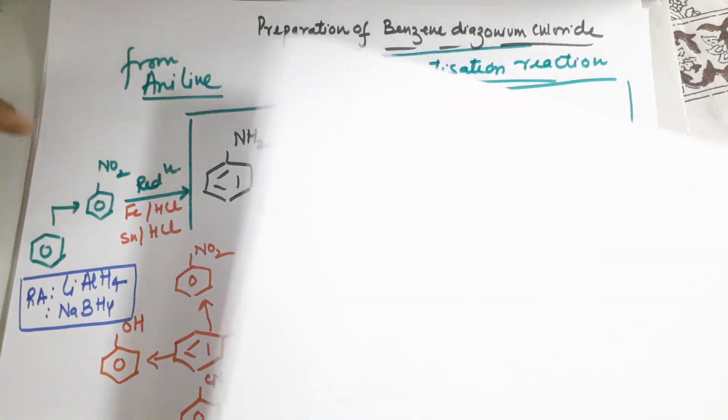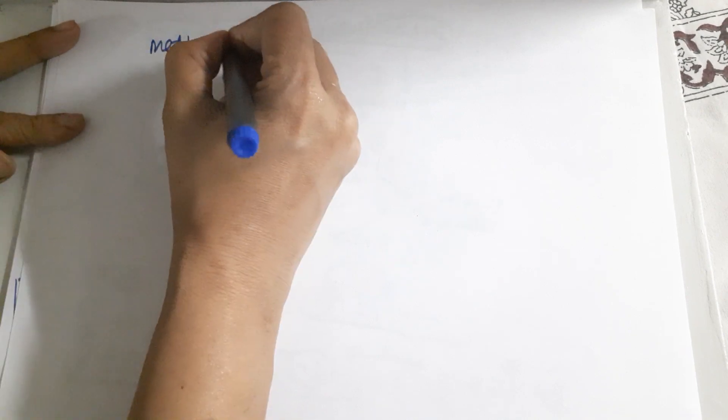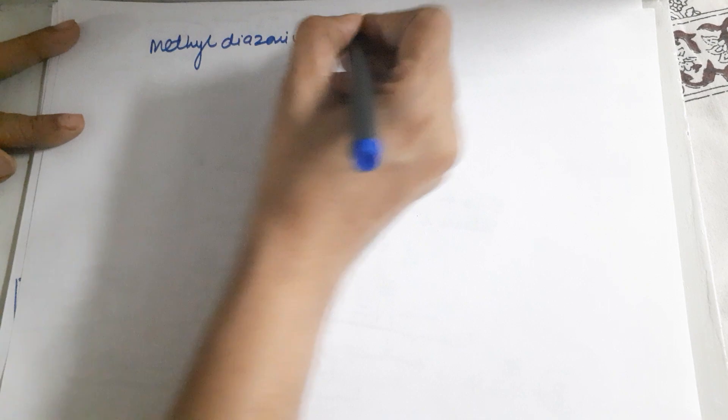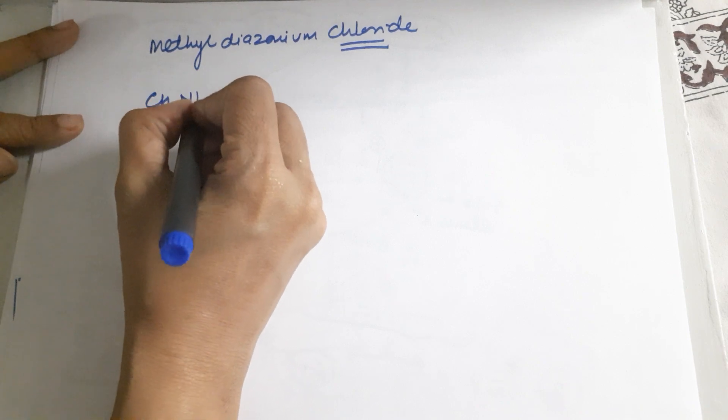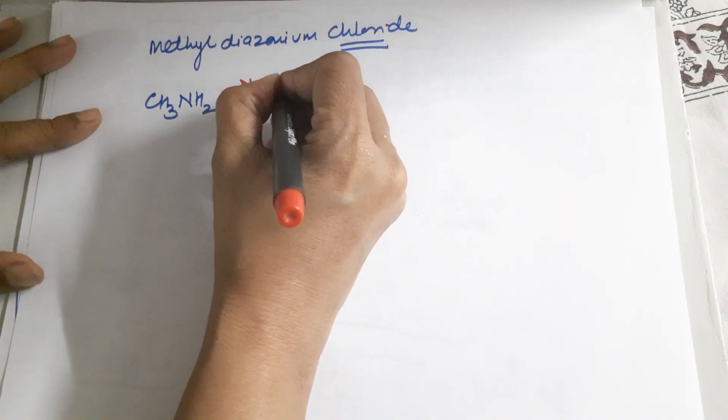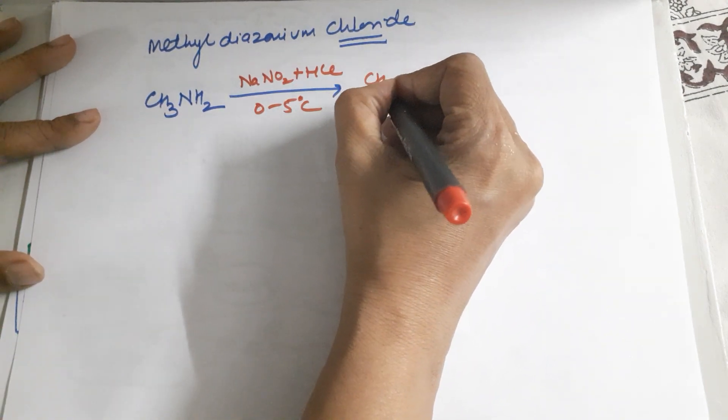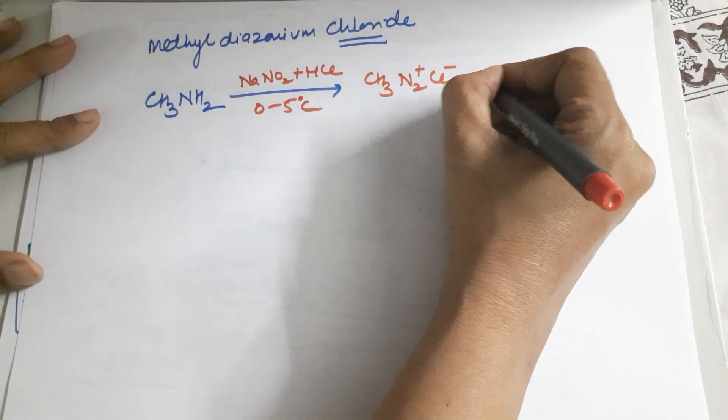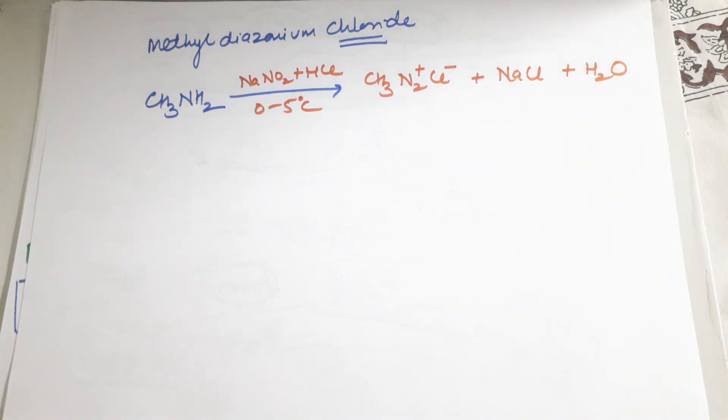But if I ask you to prepare methyl diazonium chloride, then what will you do? You will use methanamine (CH3NH2) and add the same things we added in the previous one: NaNO2 plus HCl at 0 to 5 degrees. You would get CH3N2+ Cl-, with NaCl and water as byproducts.